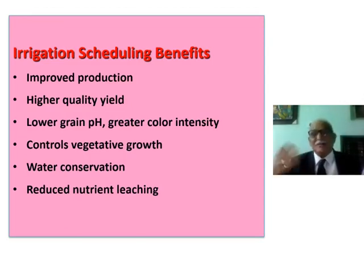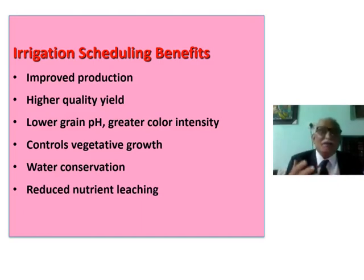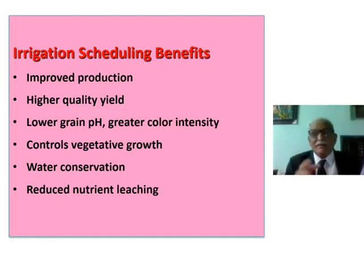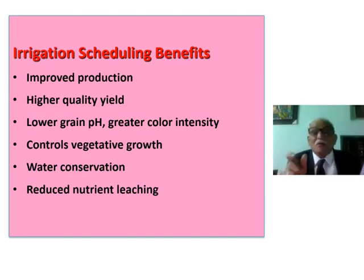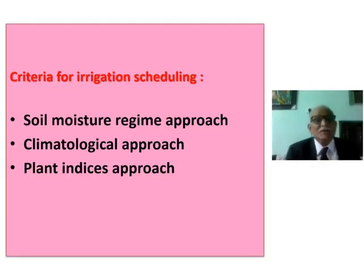Since we have water, we should schedule it properly. The advantages of irrigation scheduling include improved production — higher quantity and higher quality yield, lower grain pH, and greater color intensity. This applies not only in agriculture but also in horticulture and plantation crops. Benefits also include control of vegetative growth, water conservation, and reduced nutrient leaching.